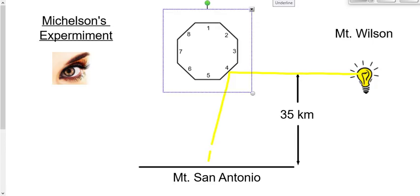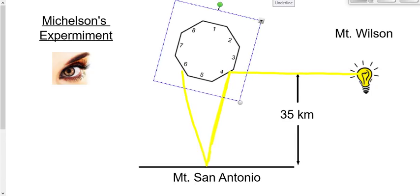The only problem here is that during the time the light takes to go from here, from side four, down to Mount San Antonio, and back again, the mirror isn't in the same position. The mirror is now right here. So, now this light reflects up here and doesn't get observed by the observer.